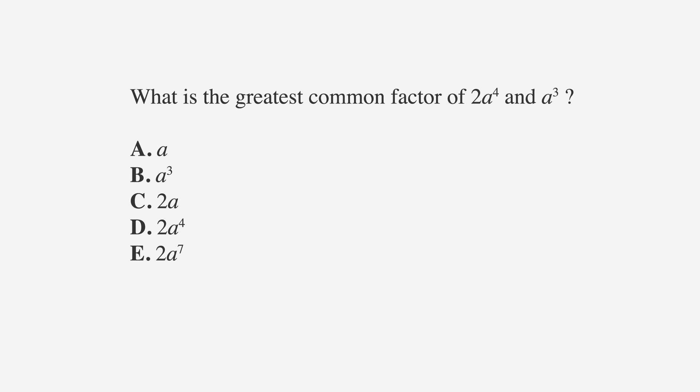What is the greatest common factor of 2 times a to the 4th and a cubed? Since we see variables in the question and variables in the answer choices, we know that we can use the picking number strategy to solve this problem. Let's pick 3 for a. Our question becomes, what is the greatest common factor of 2 times 3 to the 4th, which is 162, and 3 cubed, which is 27?